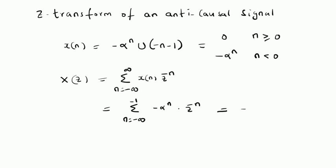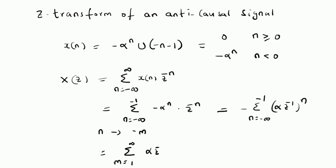This summation can be rewritten as minus the summation from n = -∞ to -1 of (α · Z⁻¹)^n. Now, by changing the variable n to -m, the summation index becomes m = 1 to ∞, and the power of (α · Z⁻¹) becomes -m.